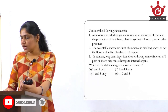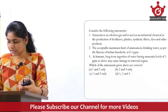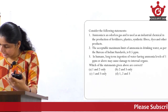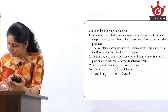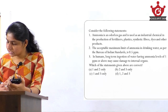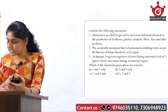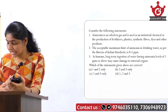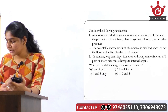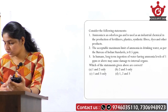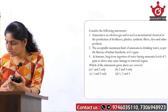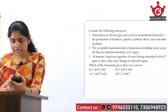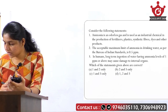The first question is: Consider the following statements. Statement 1 — Ammonia is an odorless gas and is used as an industrial chemical in the production of fertilizers, plastics, synthetic fibers, dyes, and other products. Statement 2 — The acceptable maximum limit of ammonia in drinking water as per the Bureau of Indian Standards is 0.5 ppm. Statement 3 — In humans, long-term ingestion of water having ammonia levels of 1 ppm or above may cause damage to internal organs.